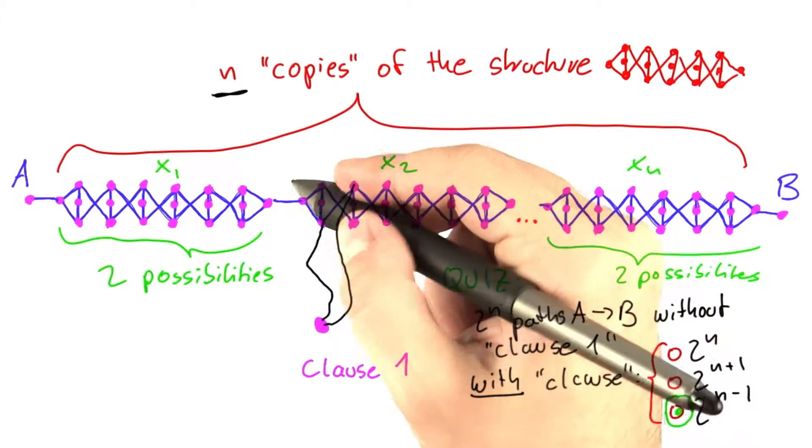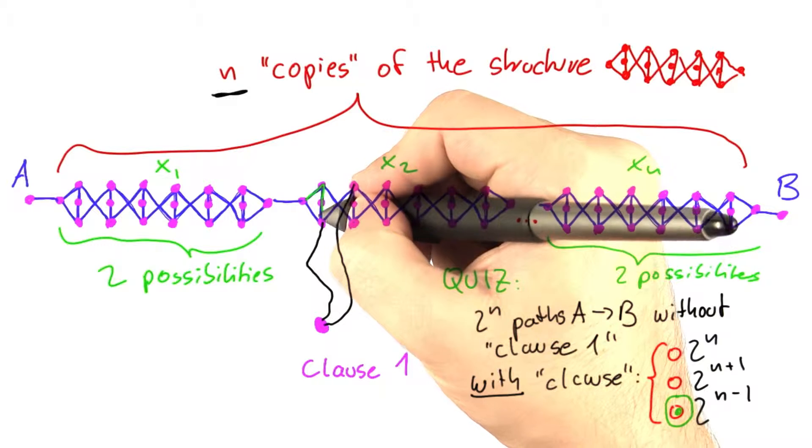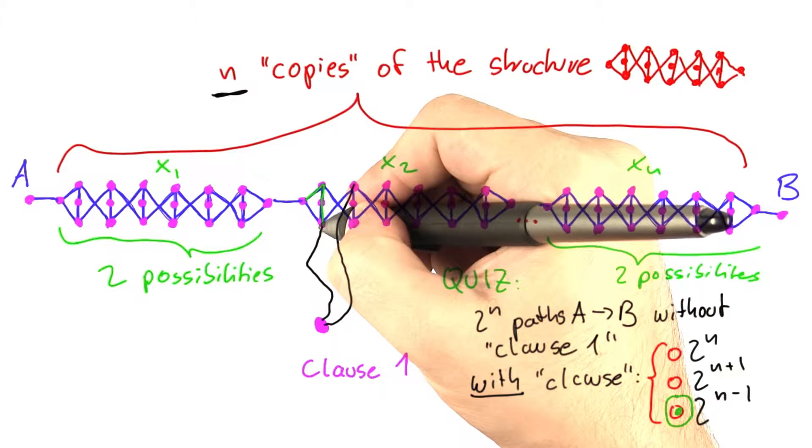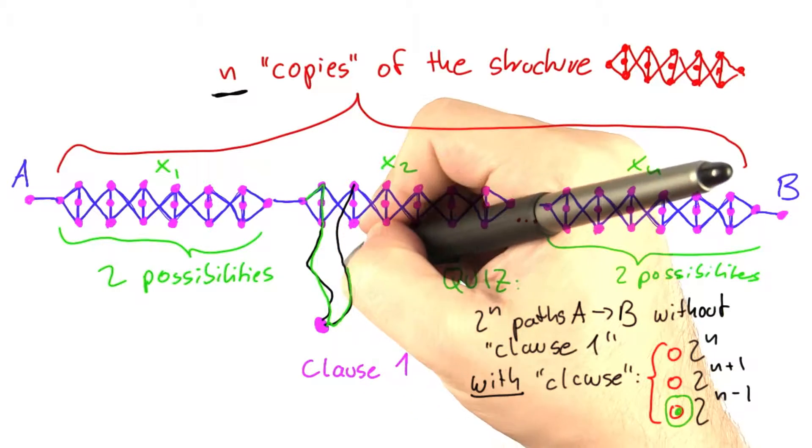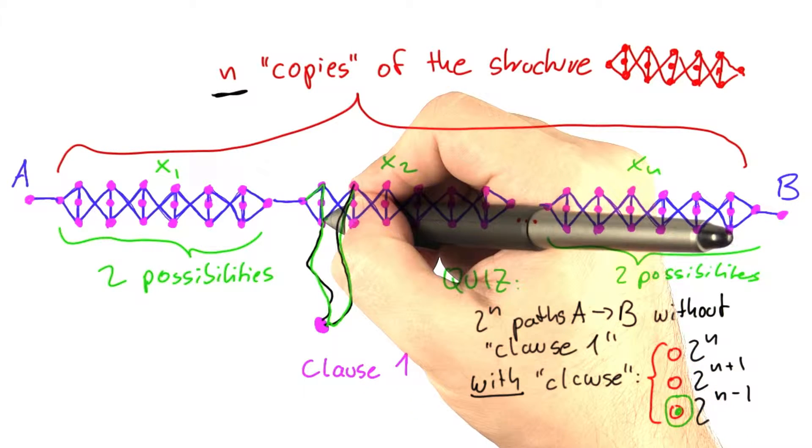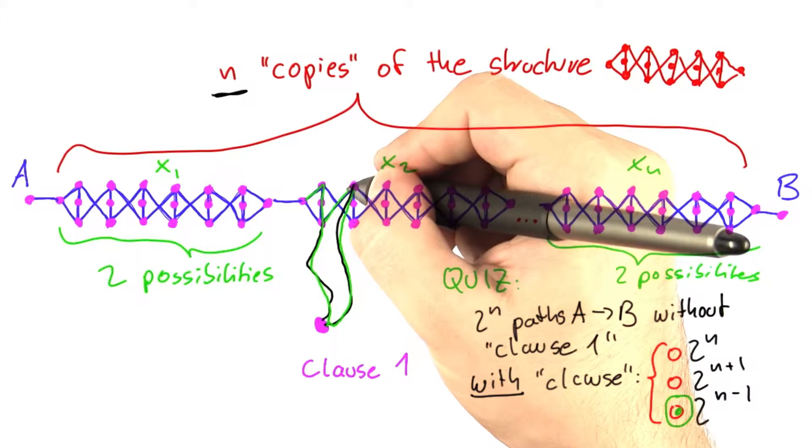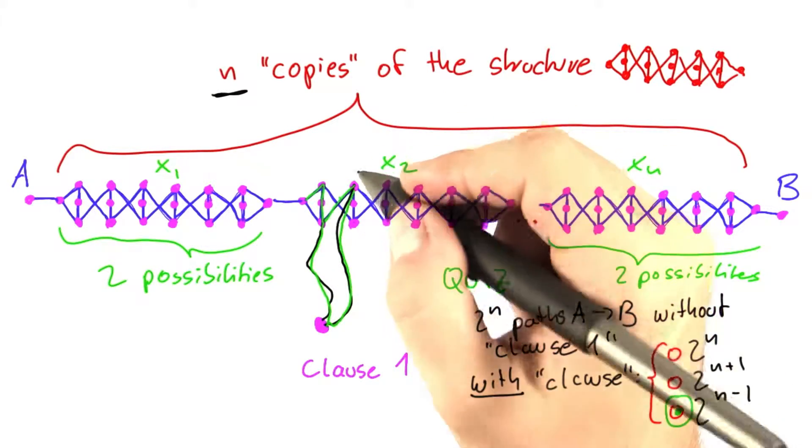But here, something interesting happens. If we choose to travel up here, then down here, then it costs us one extra edge to visit clause number 1, as opposed to if we had gone from this vertex here to this one directly. So just one extra edge.